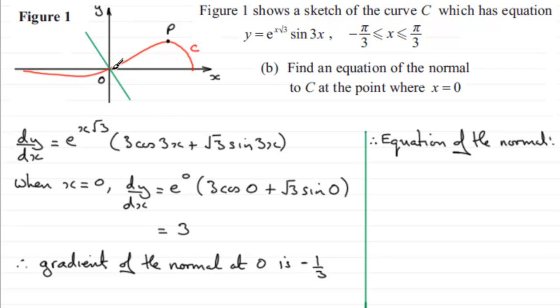We know it passes through the origin, so the c value is going to be 0. The gradient is going to be -1/3, so it's y = -1/3 x. You can leave it like that. It does say find an equation of the normal, it's not asking for any particular format.